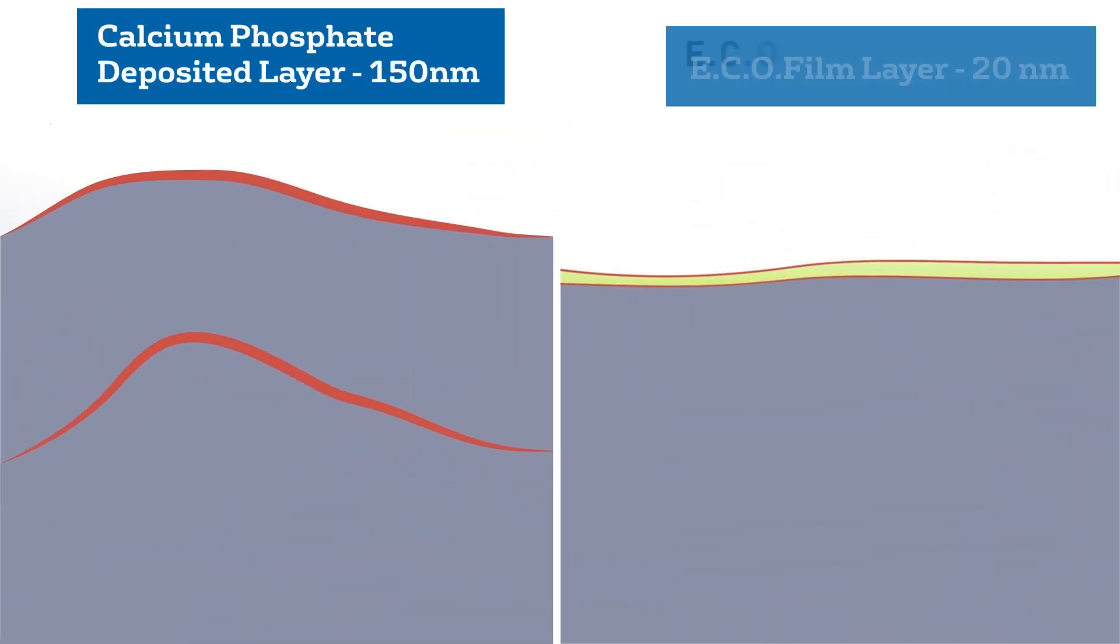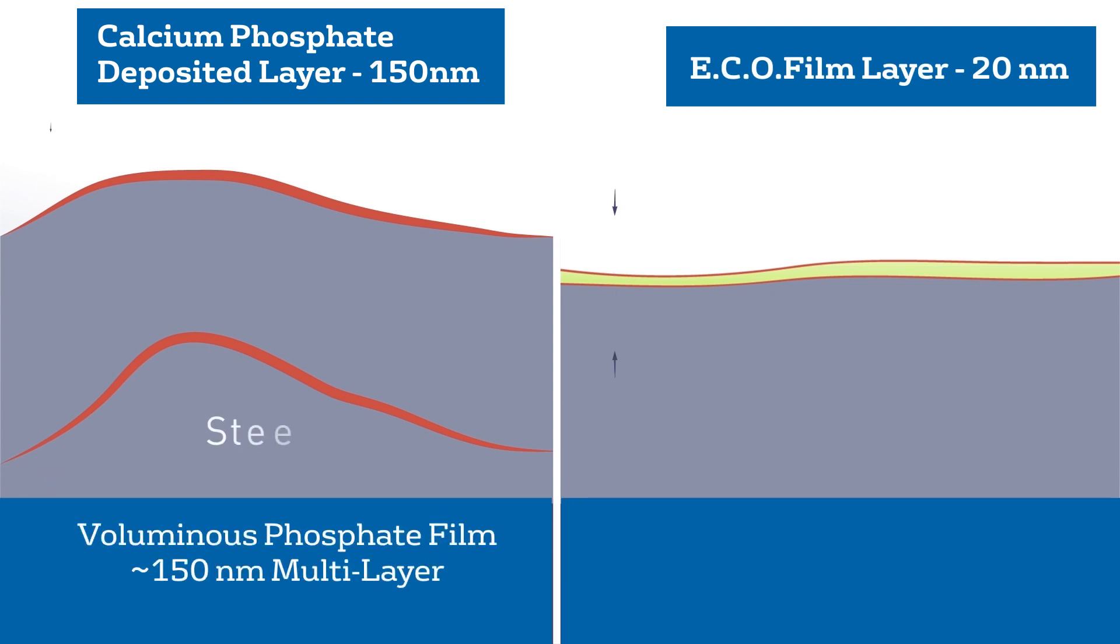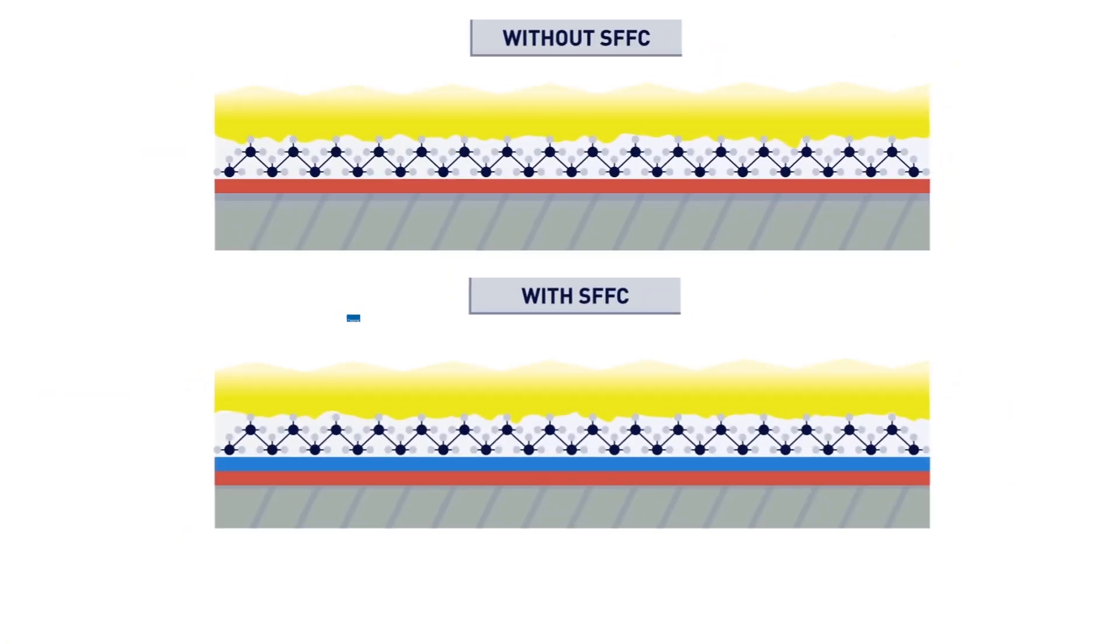Ecofilm programs auto-limit film growth, leading to a layer that is roughly 20 to 50 nanometers thick, about a third of the thickness of a protective film in a phosphate program.